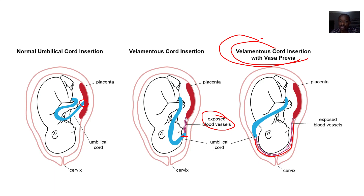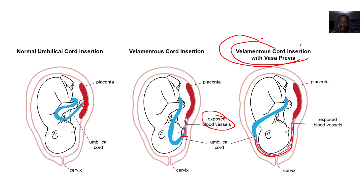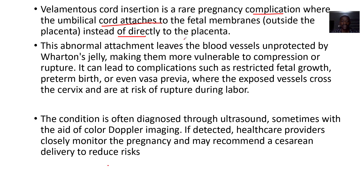With vasa previa, the umbilical cord is not even going directly to attach to the exposed vessels — it's going back before coming to the front again. This abnormal attachment leaves the blood vessels unprotected by Wharton's jelly, leaving them exposed.